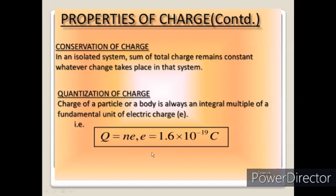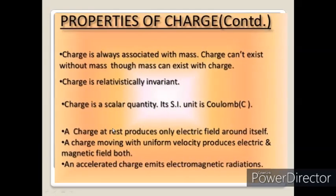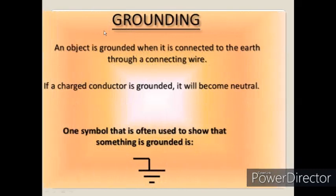Charge is always associated with mass — charge cannot exist without mass, though mass can exist without charge. Charge is relativistically invariant. Charge is a scalar quantity; its SI unit is coulomb. A charge at rest produces only an electric field around itself; a charge moving with uniform velocity produces both electric and magnetic fields; and an accelerated charge emits electromagnetic radiation.